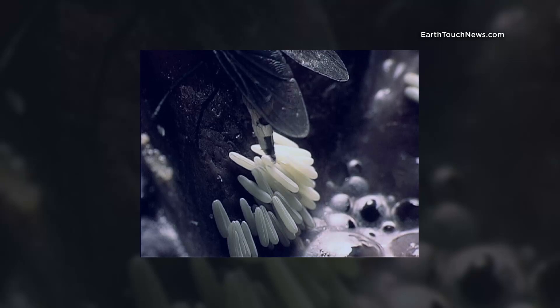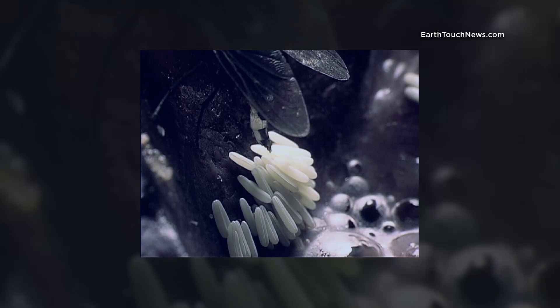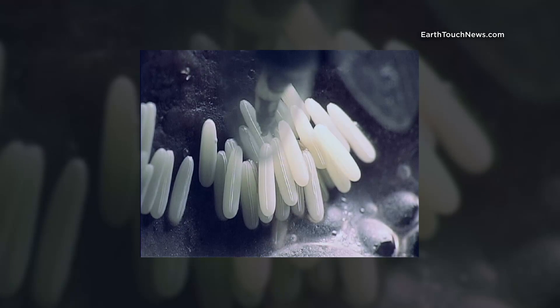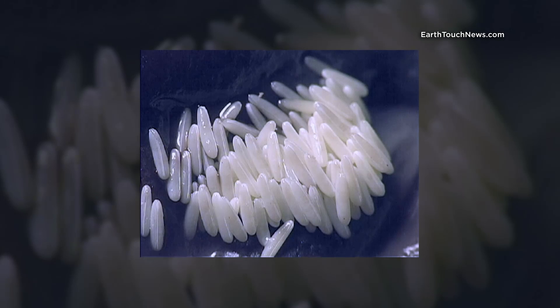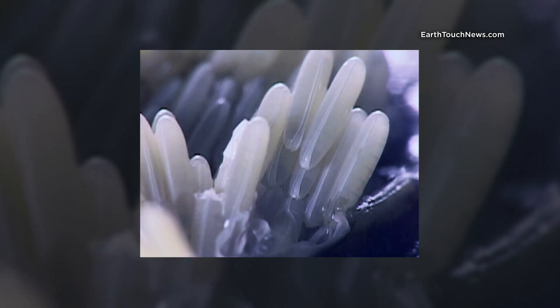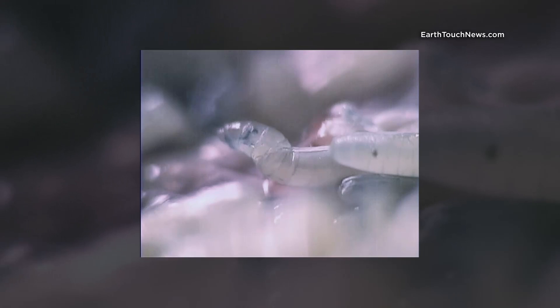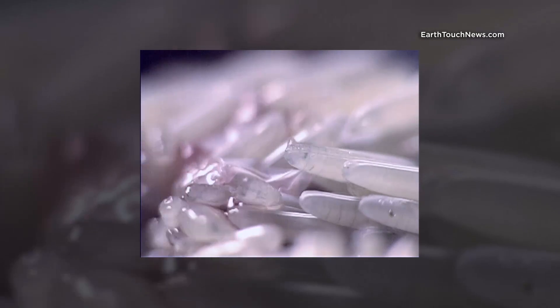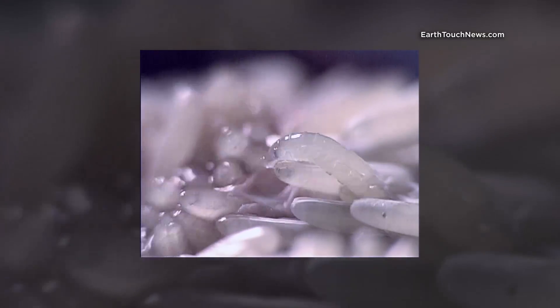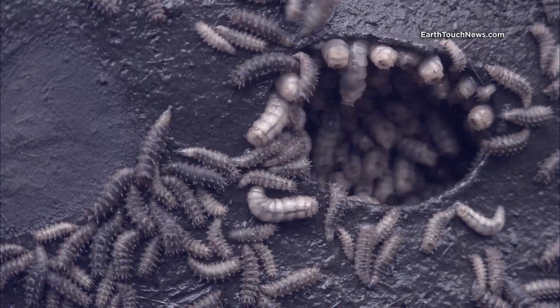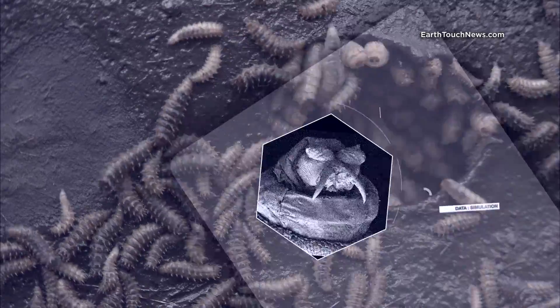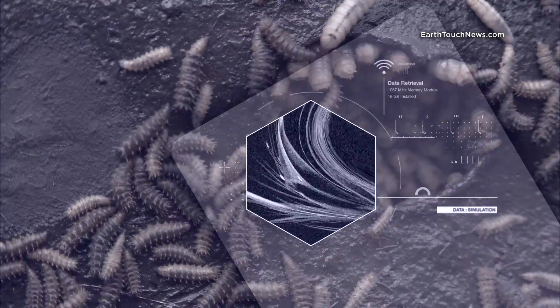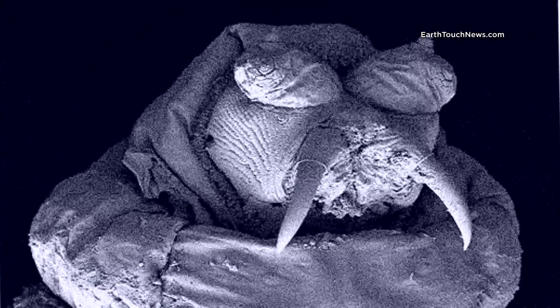Female flies can lay up to 500 eggs at a time. Just a few hours later, these hideous creatures hatch, quickly transforming the carcass into a seething, squirming mass. Maggots latch onto the flesh and feed on the rotting remains they've inherited from their mothers.